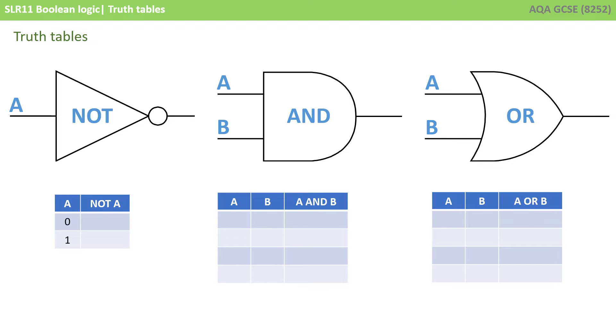There can only be two possible inputs if we've got a single input, and that's a 0 and a 1. We know that if we input a 0 the output is 1, and if we input a 1 the output is 0. So that's the truth table for a NOT gate, showing all the possible inputs and outputs.